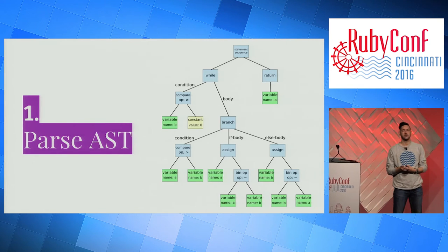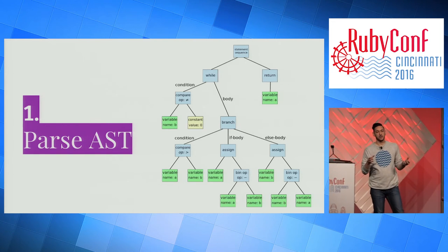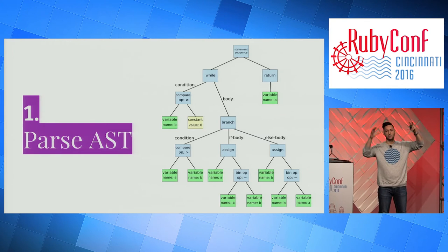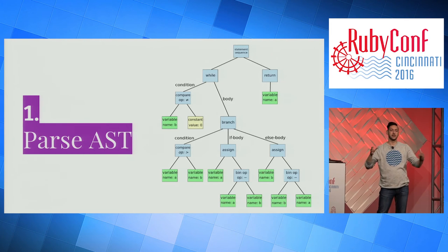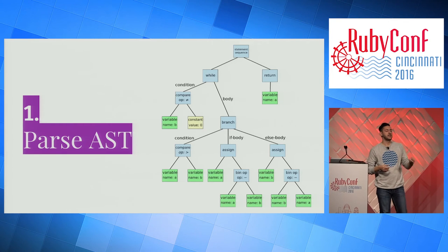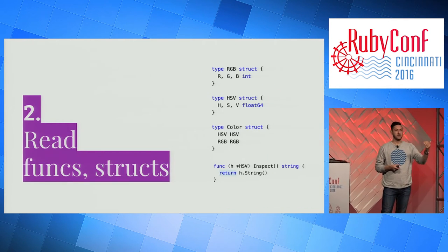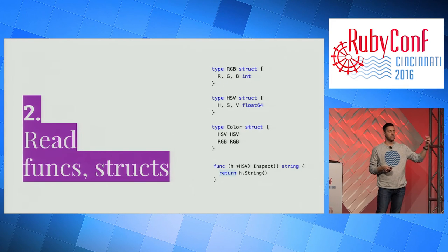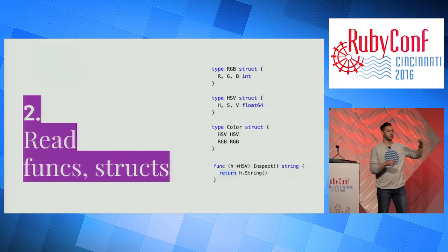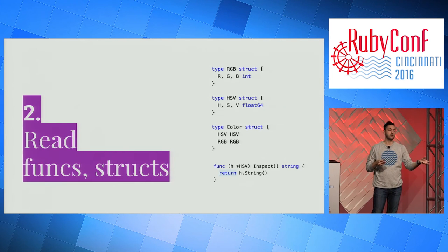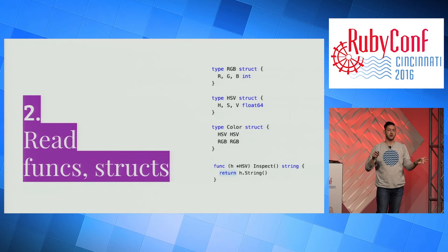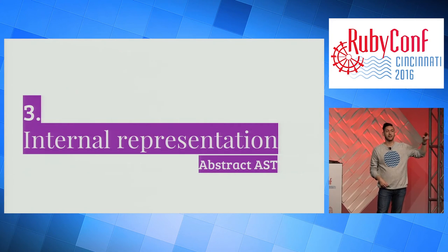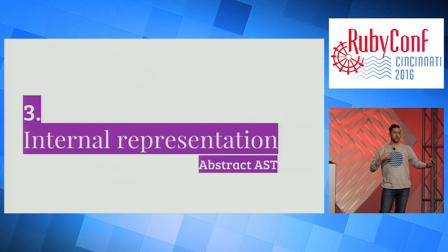The first step is always to parse the AST — the abstract syntax tree. A compiler uses this to understand the pieces of your program. It takes the text of your Go code and turns it into a big tree with all the little bits of your program that it can iterate over. We take that AST and use it to read the source code — find all the functions, find all the structures, and keep track of everything. Because Go separates data types from functions, it's very easy to detect what's an attribute and what's a function. We read all the functions, all the structs, and create our own internal representations — tracking all attributes, types, functions, arguments, return types, everything we need to generate code.